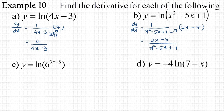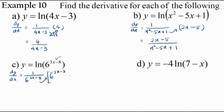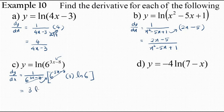Part c: y equals ln(6^(3x − 8)). The function inside the bracket is an exponential function. So dy/dx equals 1 over 6^(3x − 8) times the derivative of 6^(3x − 8). To differentiate the exponential: copy everything back as 6^(3x − 8), differentiate the power to get 3, and multiply by ln(6). The 6^(3x − 8) terms cancel, so the final answer is 3 ln(6).